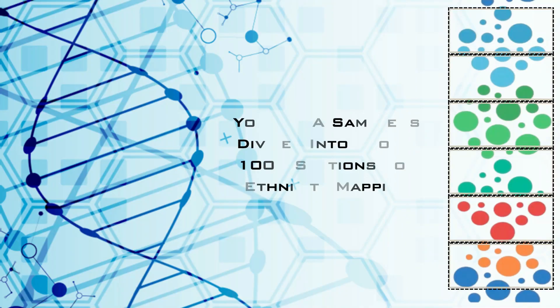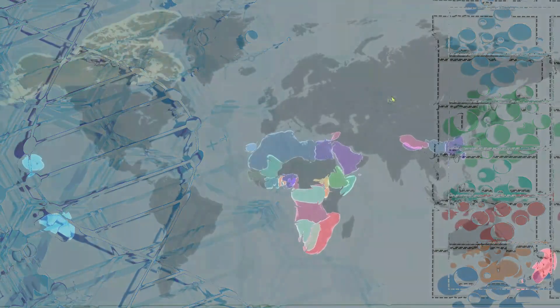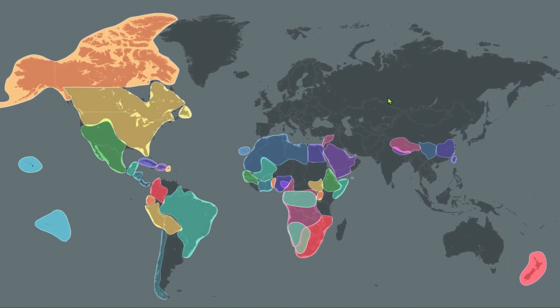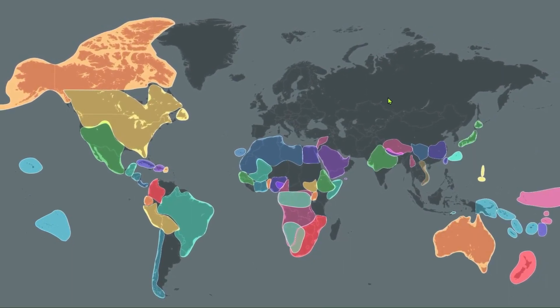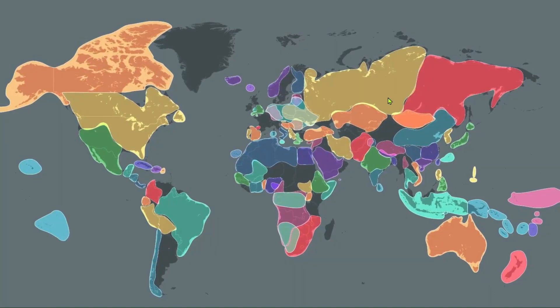First, how is ethnicity calculated? Most DNA companies calculate ethnicity in a similar way, so let's look at how Ancestry does it. After you submit your DNA to Ancestry, they divide it into about a thousand different sections for ethnicity mapping. At the same time, Ancestry groups together DNA from people with long regional histories — currently they have about 84 global regions and about 1,700 communities. Together, these are their reference panels.